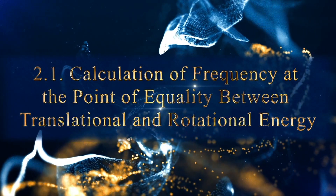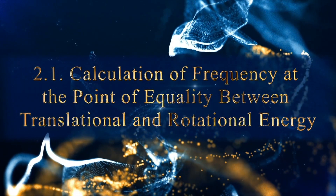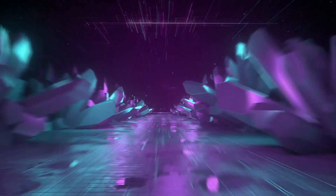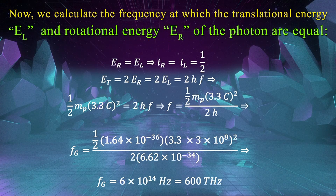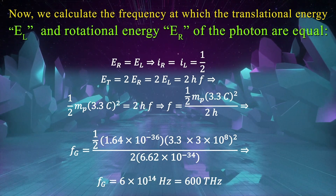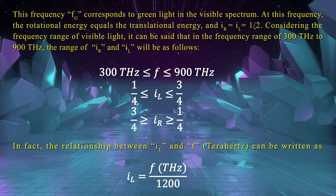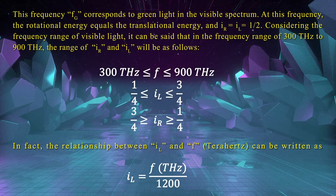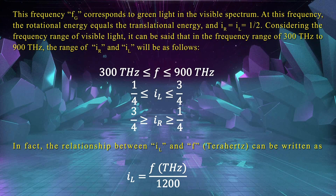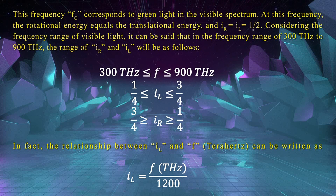Calculation of frequency at the point of equality between translational and rotational energy. We calculate the frequency at which the translational energy E_L and rotational energy E_R of the photon are equal. This frequency f_g corresponds to green light in the visible spectrum. At this frequency, the rotational energy equals the translational energy, and I_R equals I_L equals 0.5. In the frequency range of visible light, 300 THz to 900 THz, the range of I_R and I_L will be as follows.